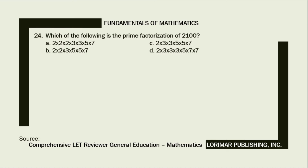Problem number 24. Which of the following is the prime factorization of 2,100? A. 2×2×2×3×3×5×7. B. 2×2×3×5×5×7. C. 2×3×3×5×5×7. D. 2×3×3×3×5×7×7. Here is our solution.